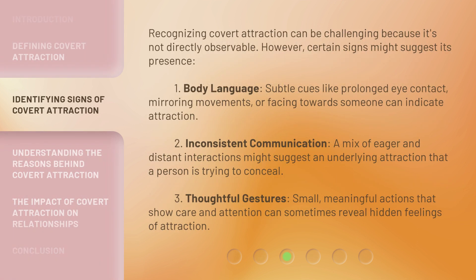Recognizing covert attraction can be challenging because it's not directly observable. However, certain signs might suggest its presence. First, body language: subtle cues like prolonged eye contact, mirroring movements, or facing towards someone can indicate attraction.